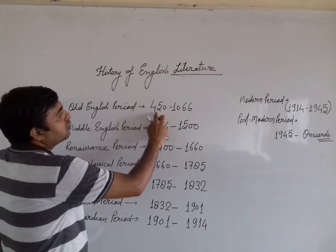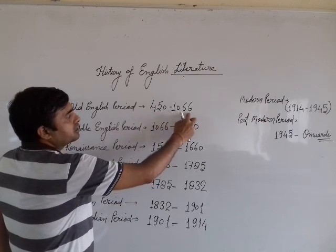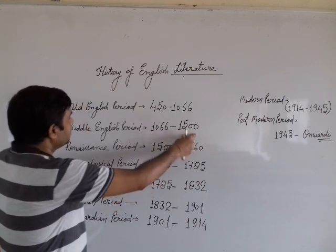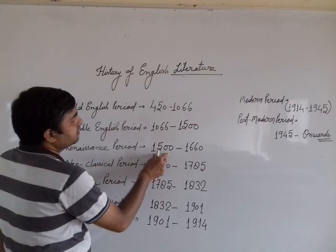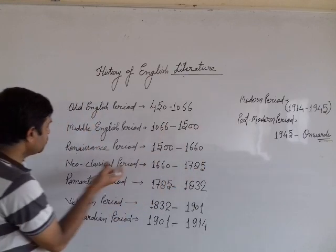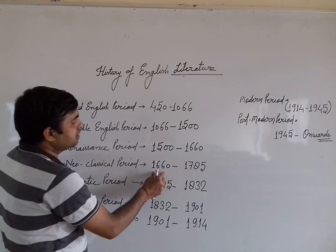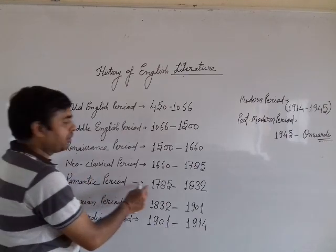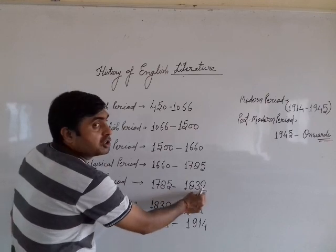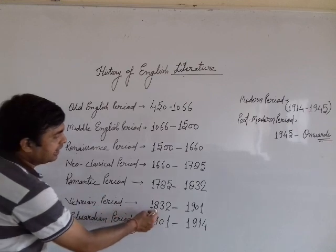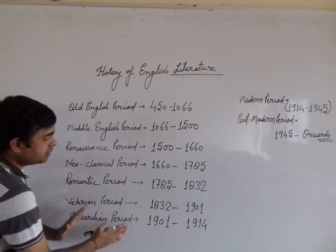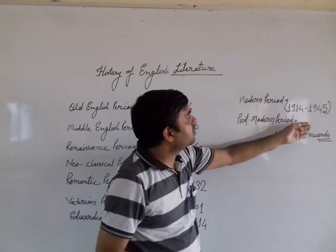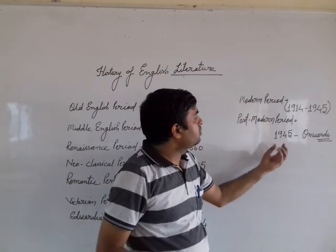Let's recap: Old English Period is from 450 to 1066. Middle English Period is from 1066 to 1500. The Renaissance Period is from 1500 to 1660. The Neoclassical Period is from 1660 to 1785. The Romantic Period is from 1785 to 1832. The Victorian Period is from 1832 to 1901. The Edwardian Period is from 1901 to 1914. The Modern Period is from 1914 to 1945. And the Postmodern Period is from 1945 onwards.